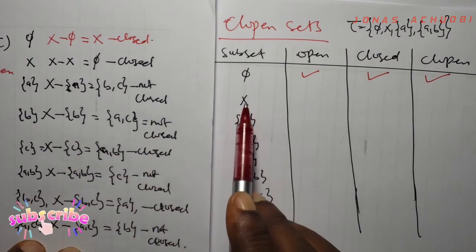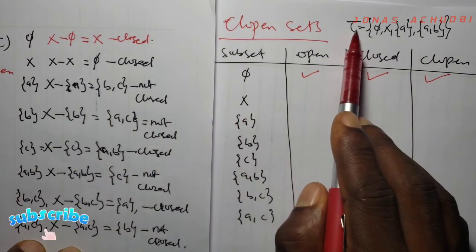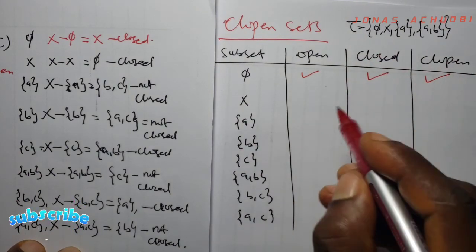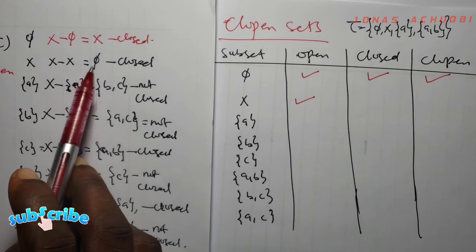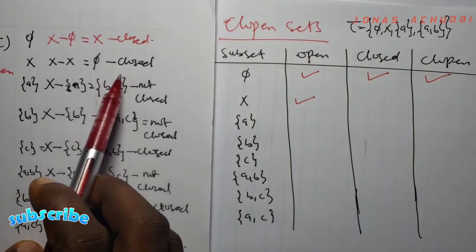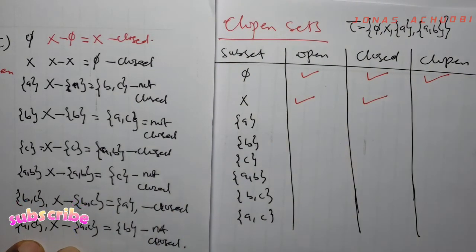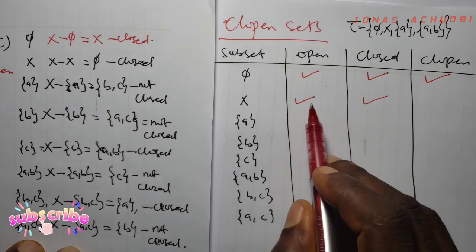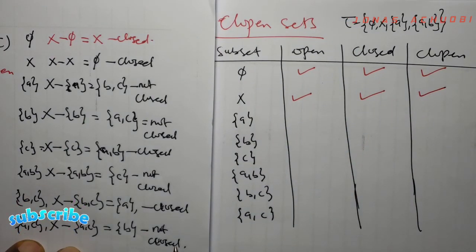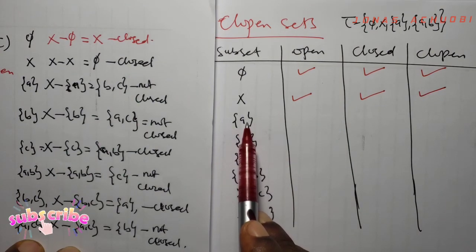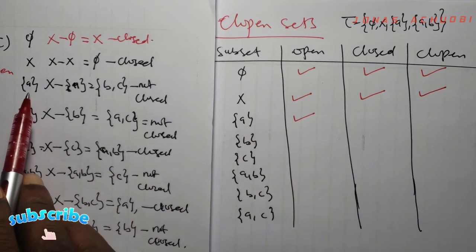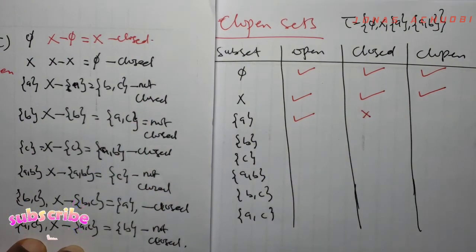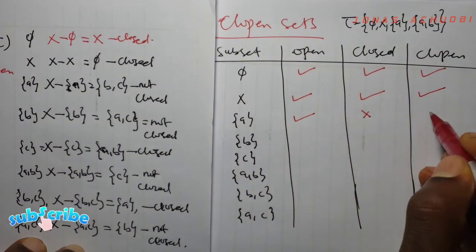The next subset is X itself. Is X open? X is in tau, so X is open. Is X closed? The complement of X is phi, and phi is in tau, so X is closed. Since X is both open and closed, X is clopen. The next subset is the singleton set A. Is A open? A is in tau, so A is open. Is A closed? A was not closed — its complement is not in tau. Since A is open but not closed, A is not clopen.